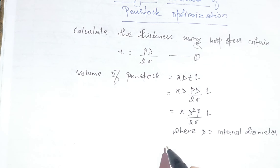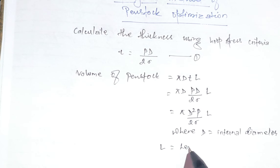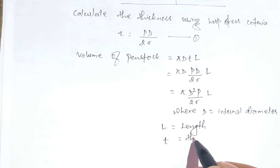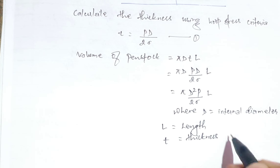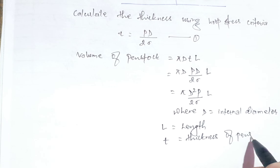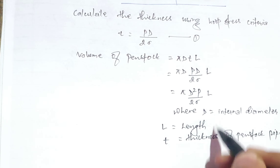Here l equals length and t equals thickness of the penstock pipe, from which the quantity or the volume of the penstock is achieved.